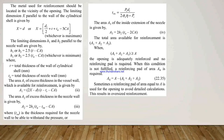For the area compensation process, the metal used for reinforcement should be located in the vicinity of the opening. The limiting dimension X, parallel to the wall of the cylindrical shell, is given by the higher of: X = T, or X = Di/2 + T + TN − 3·CA, whichever is maximum. The limiting dimensions H1 and H2, parallel to the nozzle wall, are given by the lower of: H1 or H2 = 2.5·(T − CA), or H1 or H2 = 2.5·TN − CA.